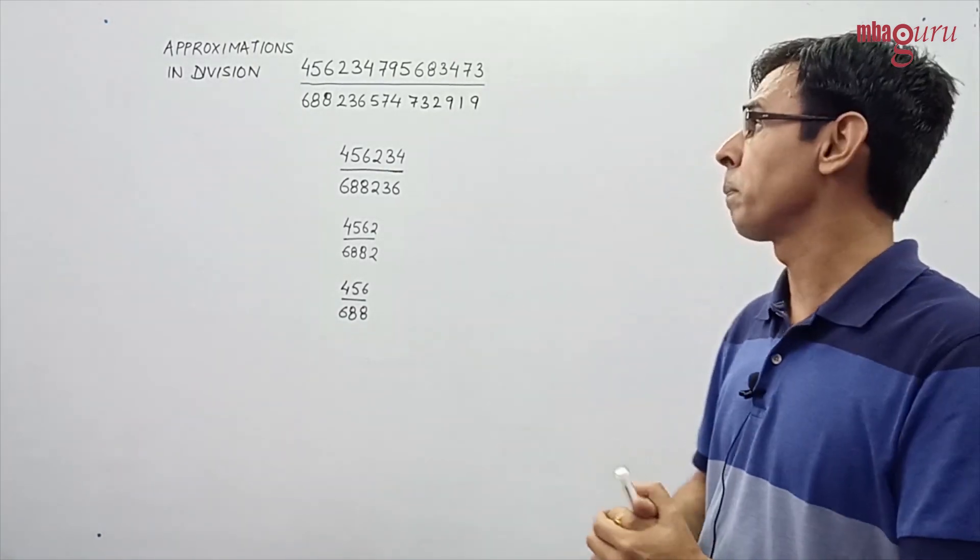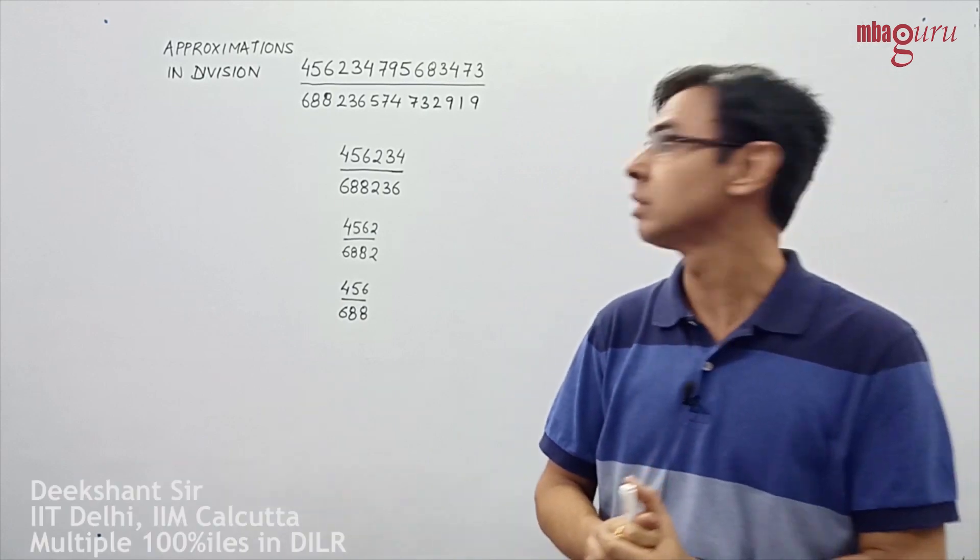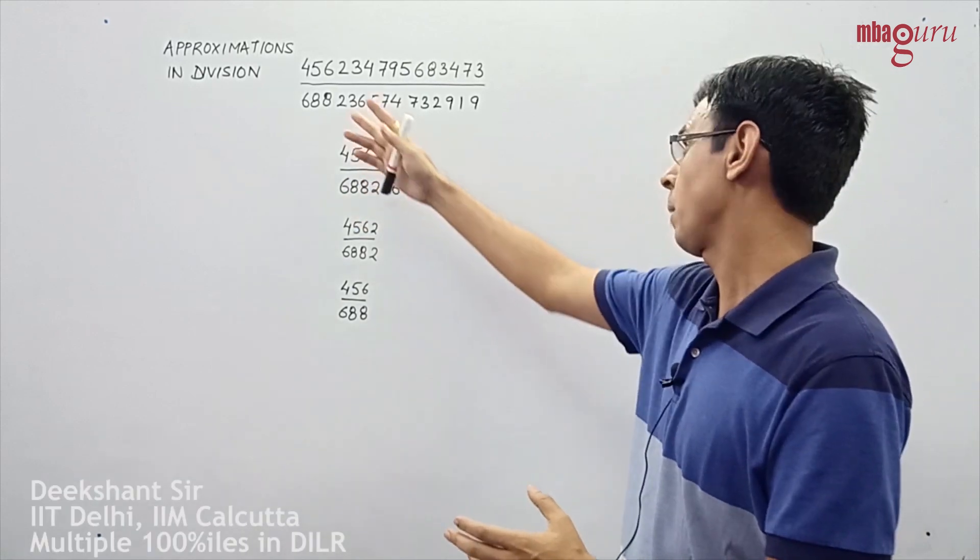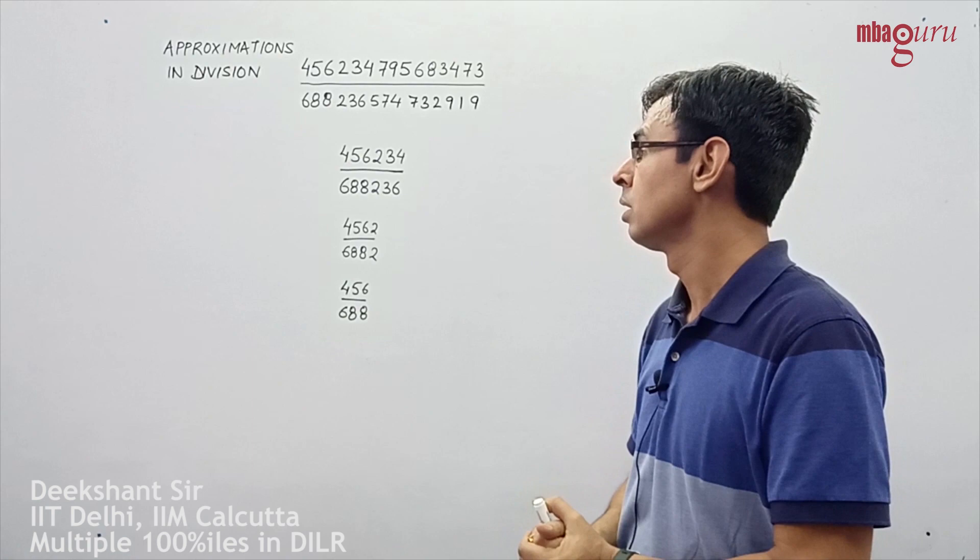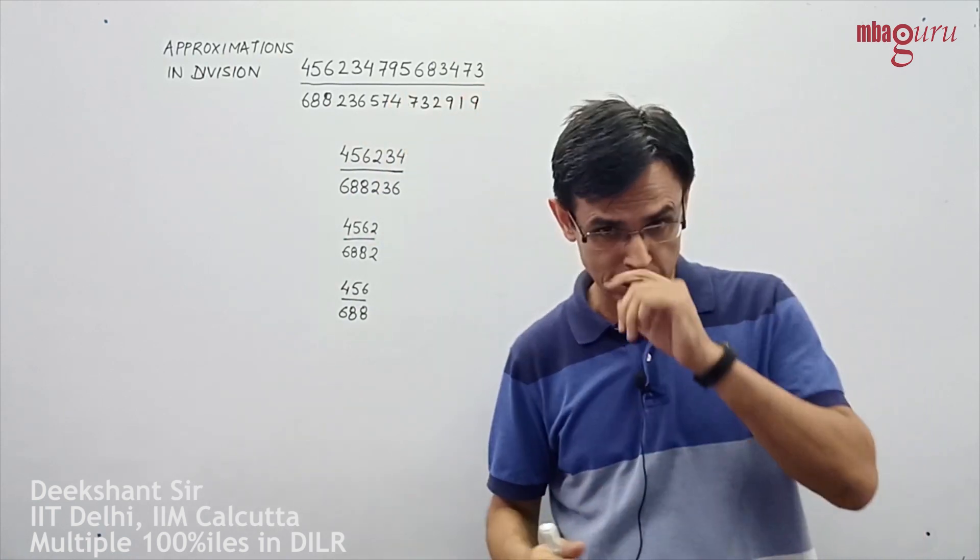We'll take a look at approximations in case of divisions with a simple example. I've written a couple of random numbers here, each of which is a 15-digit number.